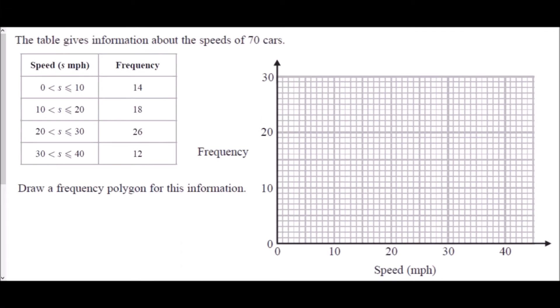Okay, so we're going to begin with a table giving us information about the speeds of 70 cars. What we have here is grouped data, continuous data, for the speed. So from 0 to 10, 10 to 20, 20 to 30, and 30 to 40 miles per hour, and we've been given a frequency for each group. What we've been asked to do is to draw a frequency polygon for this information.